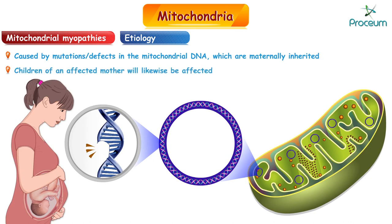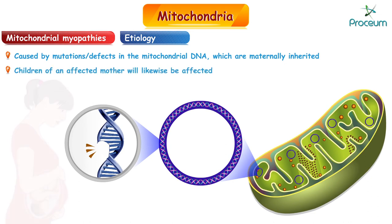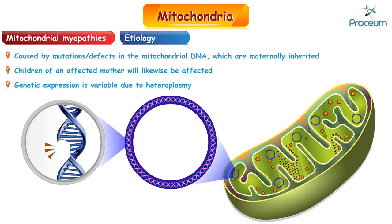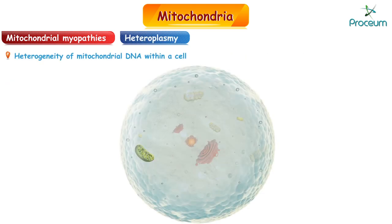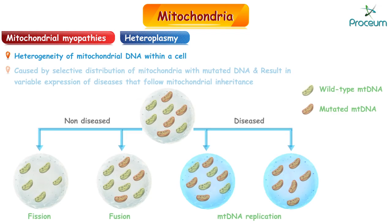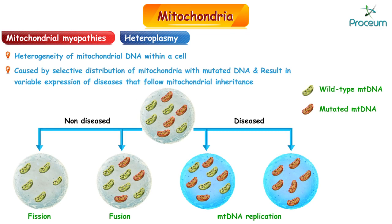Children of an affected mother will likewise be affected. The genetic expression is variable due to heteroplasmy. Heteroplasmy is the heterogeneity of the mitochondrial DNA within a cell. It is caused by selective distribution of mitochondria with mutated DNA and can result in variable expression of diseases that follow mitochondrial inheritance.